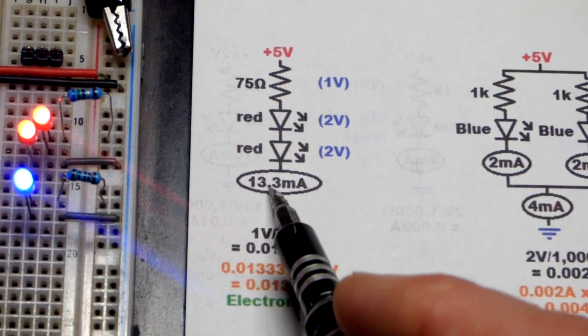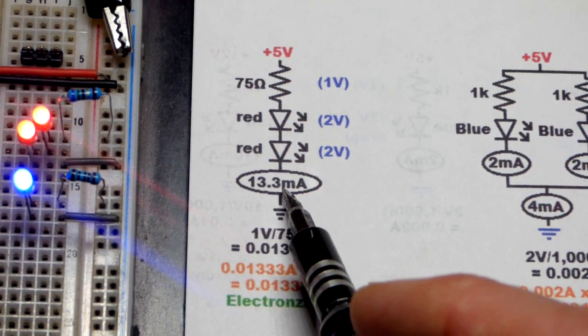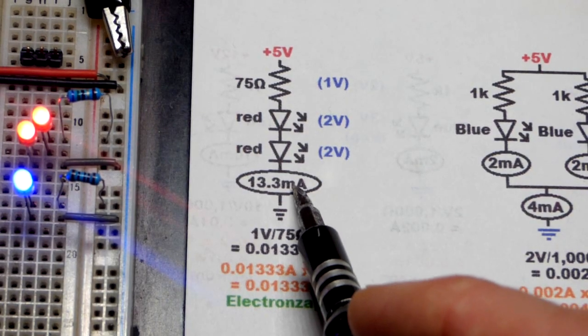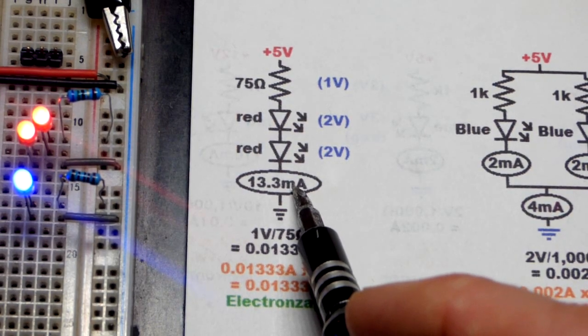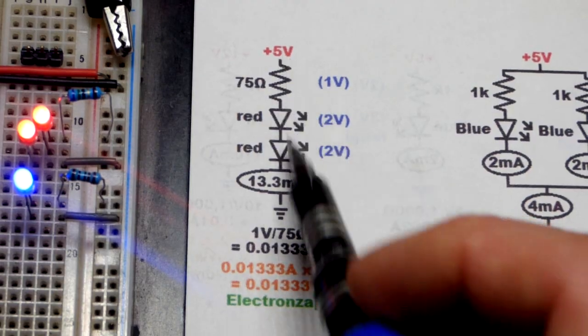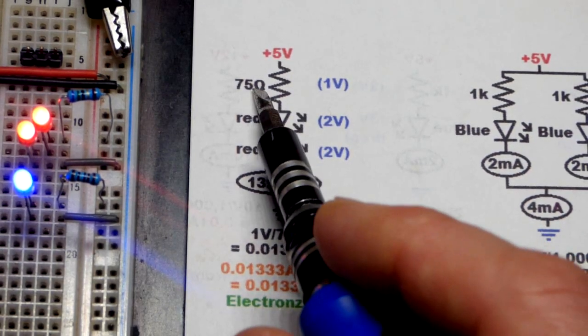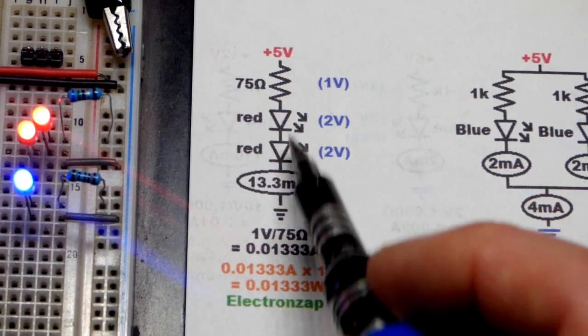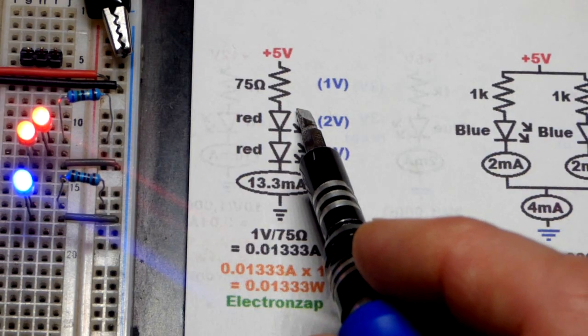But in this case, with about 13.3 milliamps of current, we should get about as bright as a blue LED with about 2 milliamps of current going through it. I do that a lot with my 12 volt circuits. So any case, we got the 75 ohms, 5 volts, red LEDs are dropping 2 volts each for a total of 4 volts, we got 1 volt.